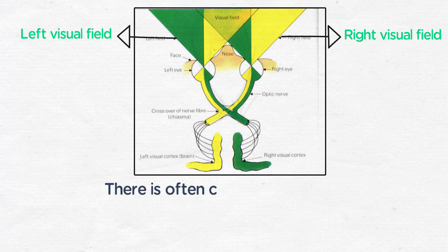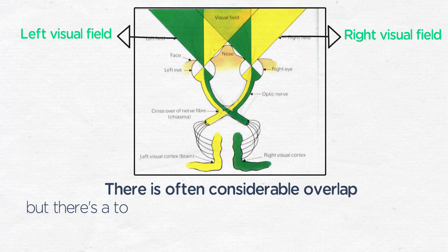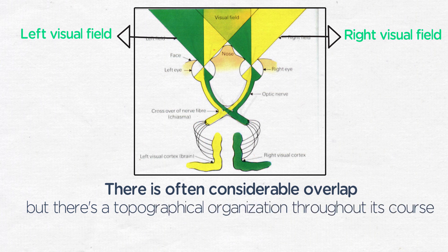There is considerable overlap between these projections. However, there is a topographical organization to the visual fields which is maintained throughout its projection and course to the occipital lobe.